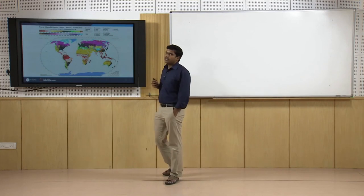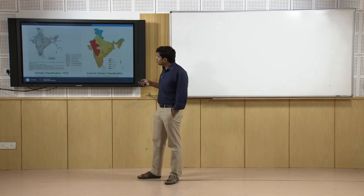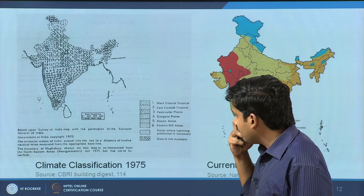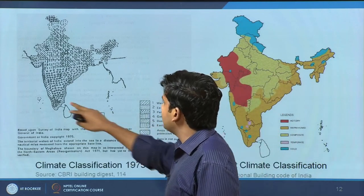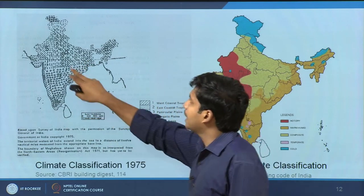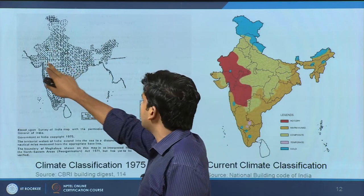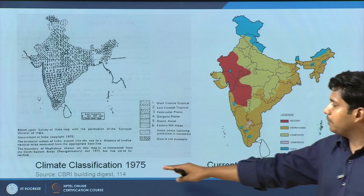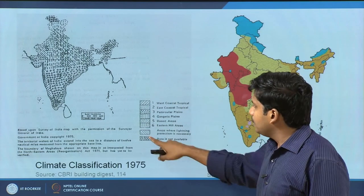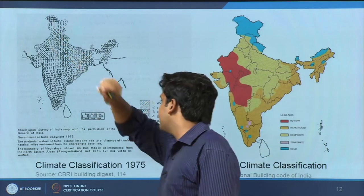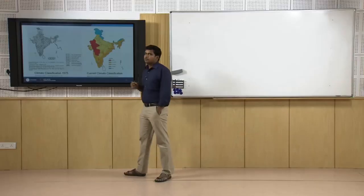Let us take a closer look at how Indian classification works. Interestingly, going back to 1975, we had a particular climate map of India with six major climate zones: west coast tropical, east coast tropical, peninsular plains, gangetic plains for most of India, desert areas, and eastern hill areas. Those days they did not have much data for the northern tip of Kashmir.